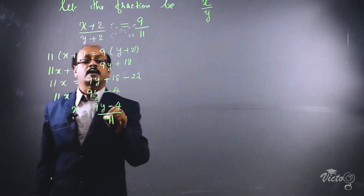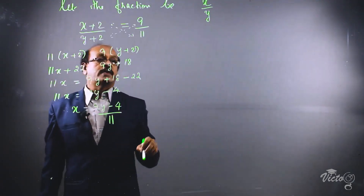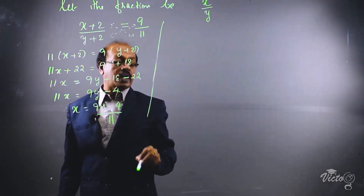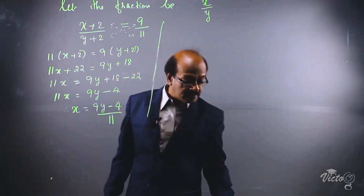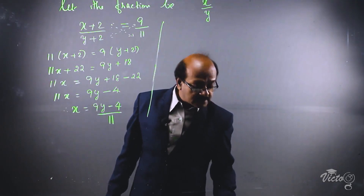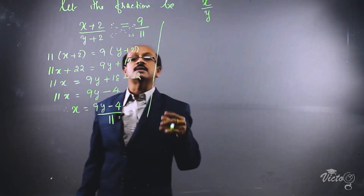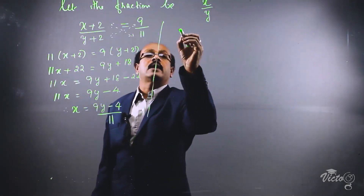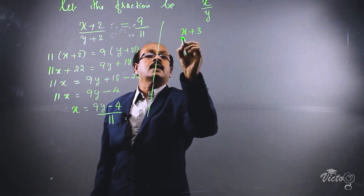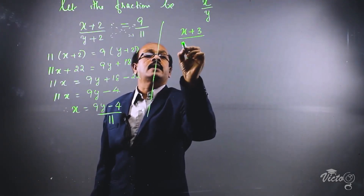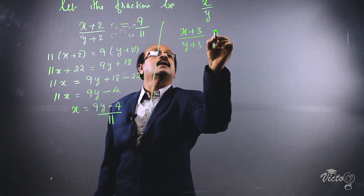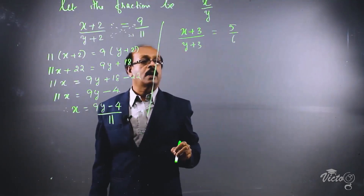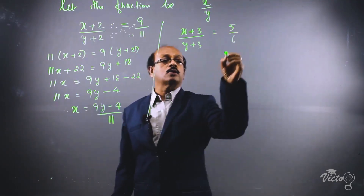We have the value of x. Now for the second part of the question: the fraction becomes 5 by 6 if 3 is added to both the numerator and denominator. That means (x + 3) divided by (y + 3) = 5 by 6. Again we are cross multiplying.